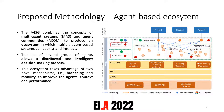The A4SG is an agent-based ecosystem specially designed to model the smart grid. It combines the concepts of multi-agent systems and agent communities to produce an ecosystem in which all agent-based systems and the agents themselves can coexist and interact. The use of several groups of agents allows a distributed and intelligent decision-making process. Multi-agent systems are the larger groups, while agent communities are smaller groups with more specific objectives. This ecosystem takes advantage of two novel mechanisms — branching and mobility — to improve agent context and performance.